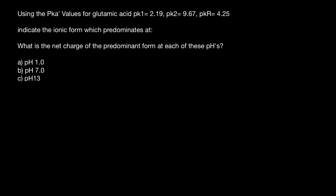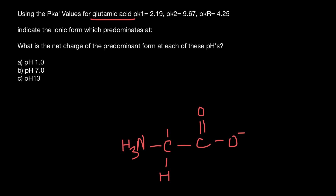We are told that the amino acid is glutamic acid, and its formula is as follows. There is a central carbon with a carboxylic carbon, a hydrogen, and an amino group. The R group consists of CH2, CH2, and a secondary carboxylic acid group — carbon, oxygen, and another oxygen. So we have one positive charge and two negative charges.